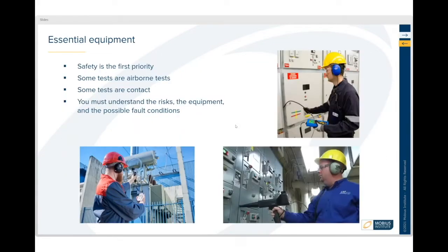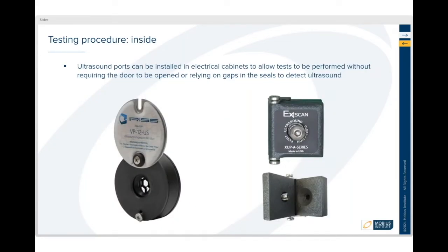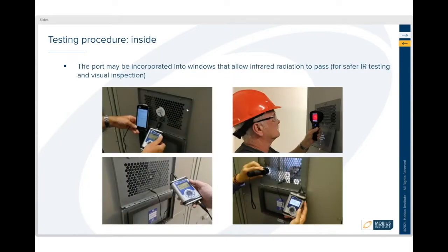From a safety point of view, we always have to be safe in general but also in particular with electrical systems. There are products that you can install in the door that makes it much easier and more repeatable to take that measurement and potentially also do infrared. Look through the door to see what's happening from an infrared point of view, but also either with ultrasound sensors built into the door or listen through it as you saw just a moment ago.